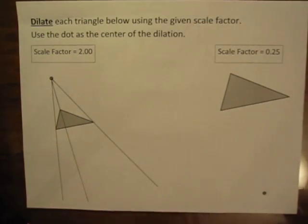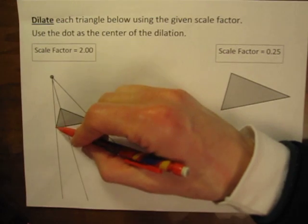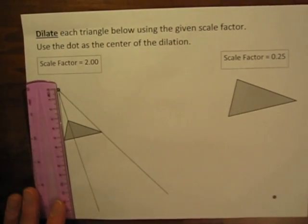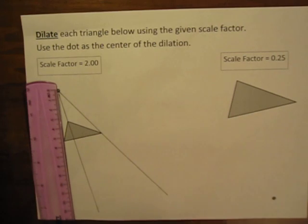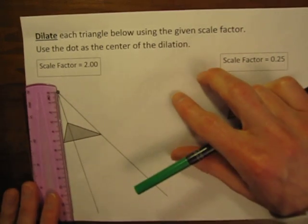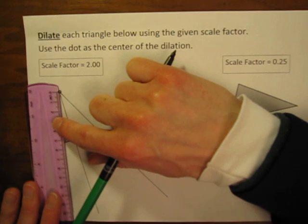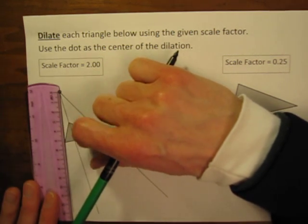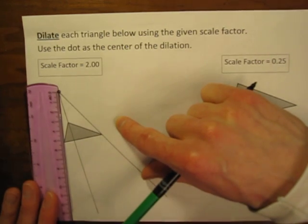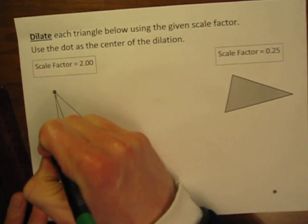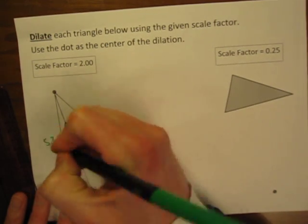Now the next thing we do is we want to know how far are each of these points from that center of the dilation. So I will get out my ruler and try to measure this carefully. If you measure very carefully, it should work out perfectly. And this one appears to be about, let's call it 5.2 cm.